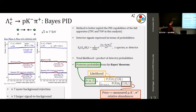Using Bayes' theorem, we retrieve the posterior probability, which tells us: given a certain set of signals in our detectors, what is the probability these signals are produced by a particle of species h_i? This information is exploited in the analysis to better separate signal from background. Moving from a standard sigma-based PID to a Bayesian PID approach, we observed a background rejection improvement of about a factor of seven and a larger signal-to-background ratio of about a factor of ten.